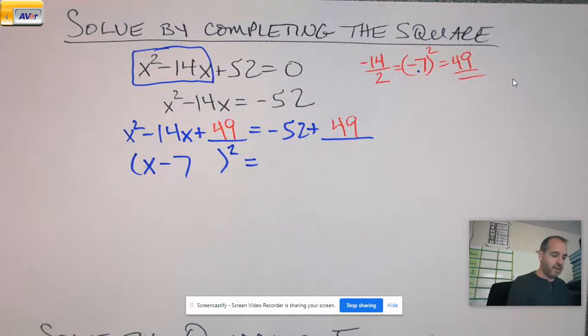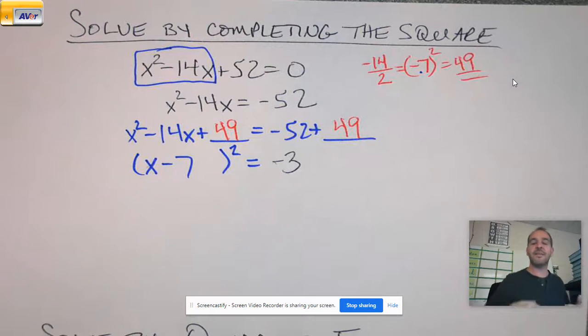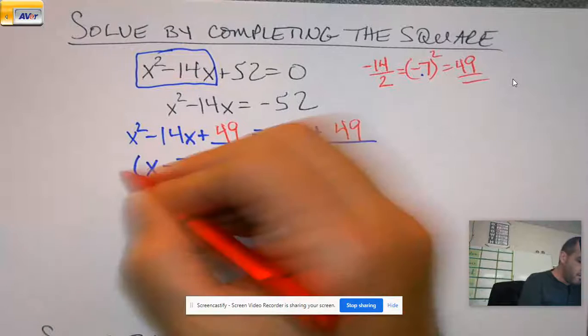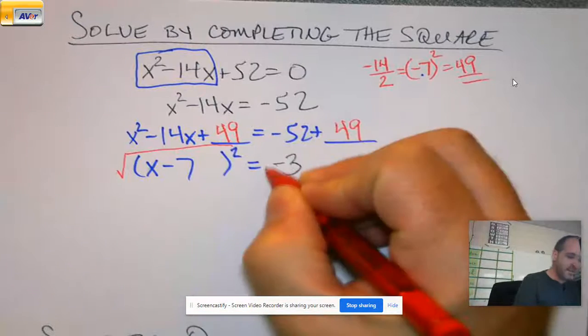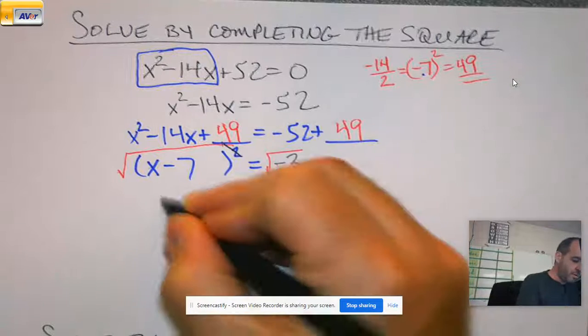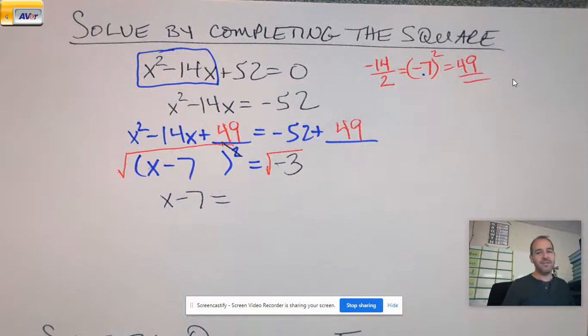Negative 52 plus 49 is negative 3. And we are off to the races because now it's like the last example we did, except the parentheses are alone already. So I take my square root, zap those out. Remember over here, this hasn't changed.